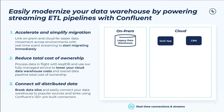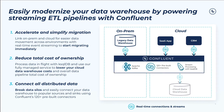Modernizing your data warehouse doesn't need to be this long and arduous journey. With Confluent, you can start migrating immediately by linking across on-prem and cloud environments with real-time event streaming. You'll usually generate more data than you need to analyze, but Confluent can help you reduce your cloud data warehouse spend by processing that data in-flight with ksqlDB. Finally, our Data in Motion platform has a rich ecosystem of pre-built connectors to help you break data silos and connect your distributed data sources across the organization.